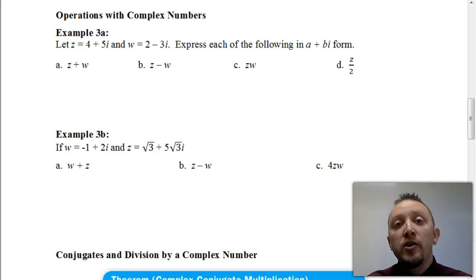So in this video, what we're going to do is I'm going to focus on just some basic operations with complex numbers, specifically adding two complex numbers, subtracting two complex numbers, and multiplying two or more complex numbers. And the way that we're going to do this is, for this first example, we're going to define z as 4 plus 5i and w as 2 minus 3i.